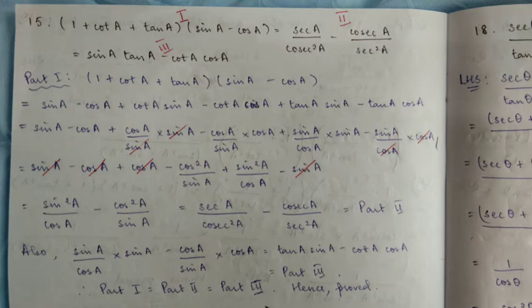1 is sin A, 1 is minus cos A. So that's 1: sin A, 2 is minus cos A, multiply. 2 is sin A, 2 is minus cos A — multiply. So 1 is sin A, 2 is minus cos A. Cancel, cancel.